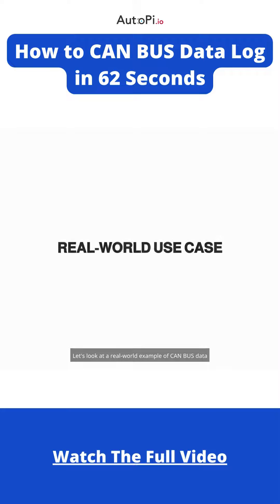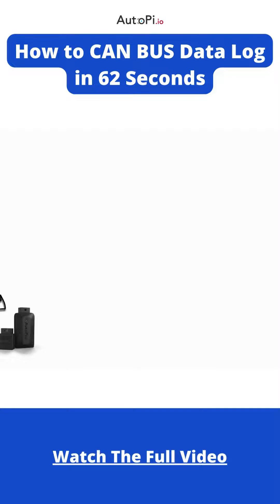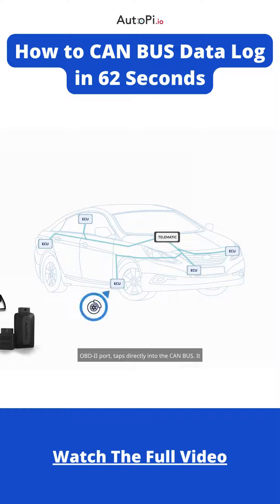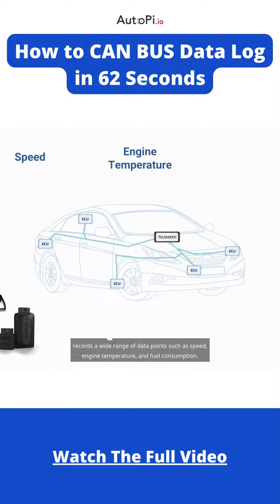Let's look at a real-world example of CAN bus data logging in action with the use of telematics devices like the AutoPi. The AutoPi, a small device plugged into the car's OBD2 port, taps directly into the CAN bus. It records a wide range of data points such as speed, engine temperature, and fuel consumption.